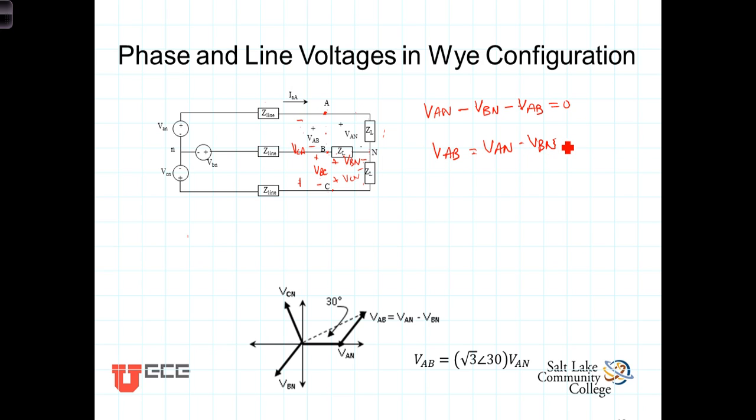Keep in mind that VAN, VBN, and of course VCN are a set of balanced three-phase voltages, which means that VAN and VBN have the same magnitude, just different phases.